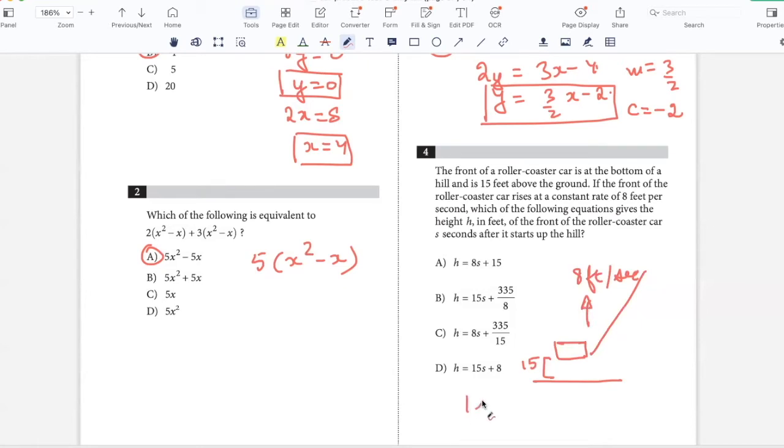Which equation gives the height after s seconds? In one second it rises 8 feet, so in s seconds it would rise 8s feet. And the initial height is 15, so the final height would be 15 plus 8s, which is option A.